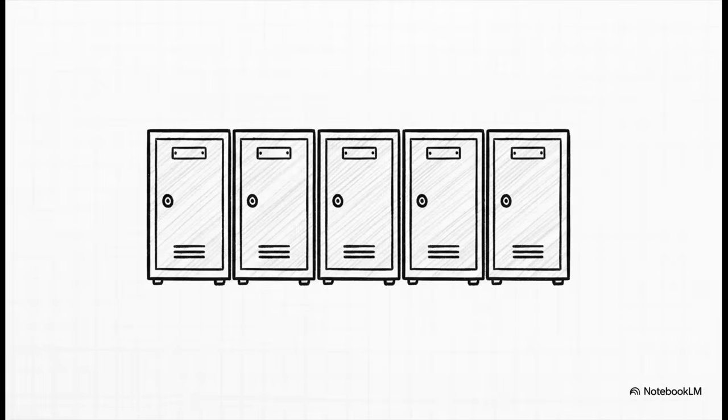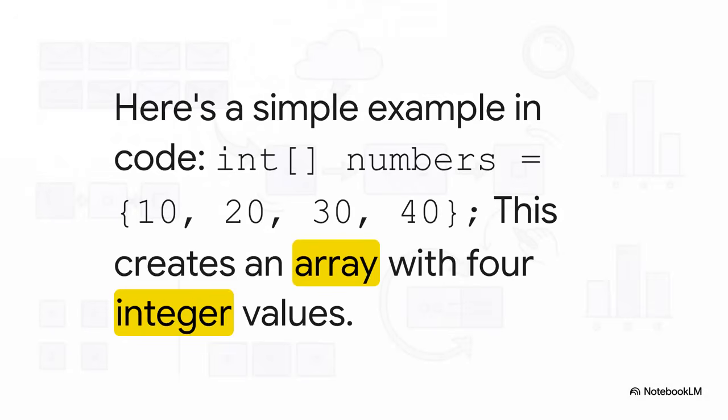To really get this, let's use an analogy you won't forget. Just picture a row of mailboxes, or maybe some storage lockers, all lined up perfectly next to each other. Each box can hold one item, and crucially, each box has a number on it so you know exactly where to find things. That, my friends, is basically an array.